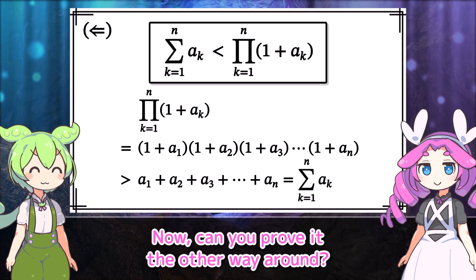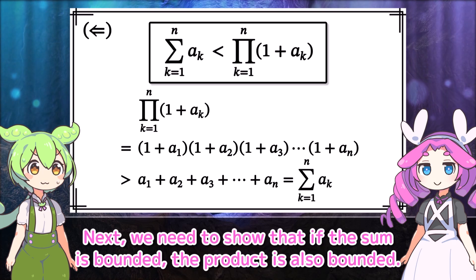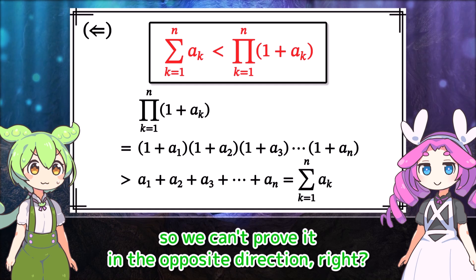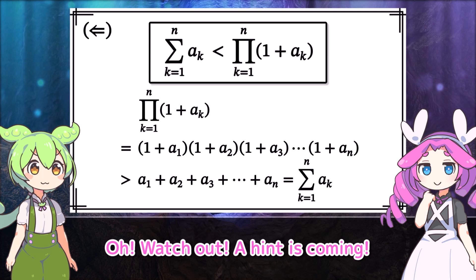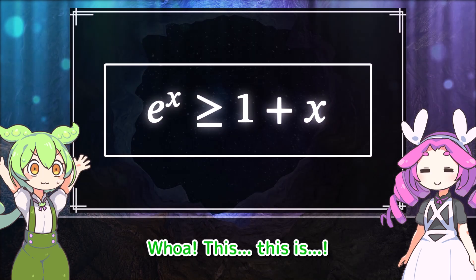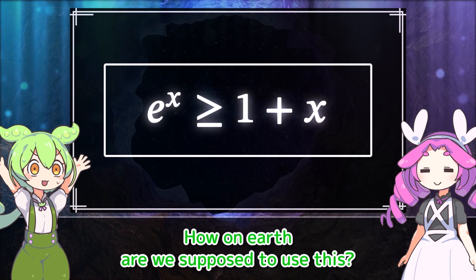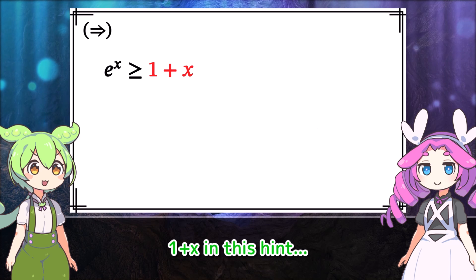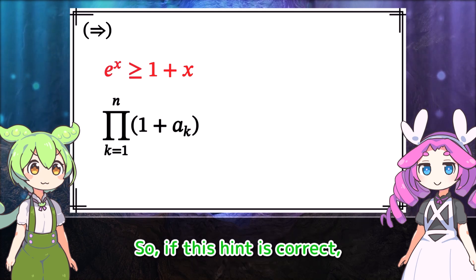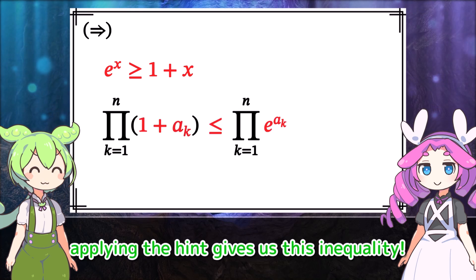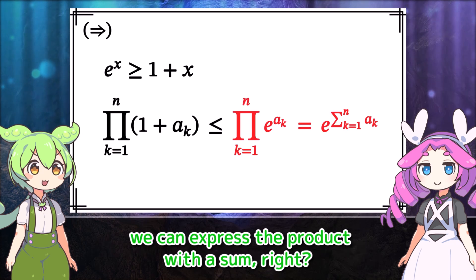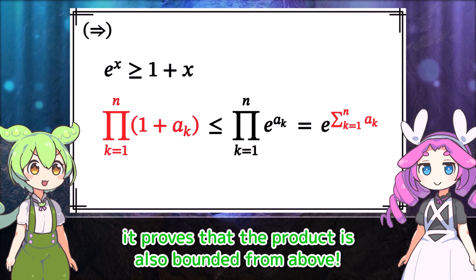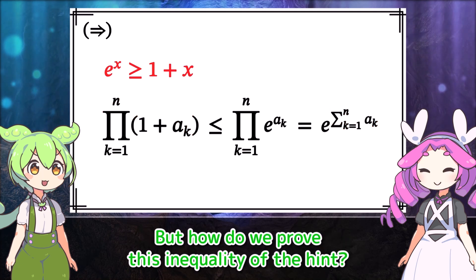Now, can you prove it the other way around? Next, we need to show that if the sum is bounded, the product is also bounded. But we've already proved that this inequality holds, so we can't prove it in the opposite direction, right? It does seem pretty difficult. A hint is coming! Looks like this is the hint. How on earth are we supposed to use this? Look closely, Zandamon — doesn't this part look familiar? Now that you mention it, (1 + x) in this hint is the same form as the terms in the product. So if this hint is correct, applying it gives us this inequality. Then, if we use the product rules, we can express the product with a sum. So this means, if the sum is bounded from above, it proves that the product is also bounded from above.